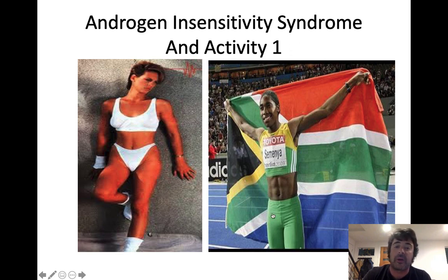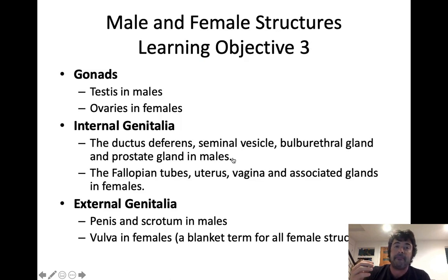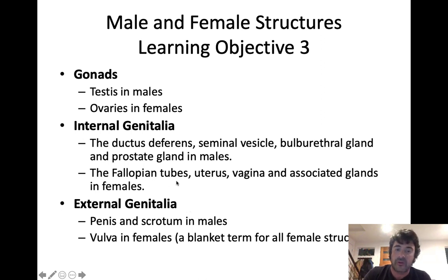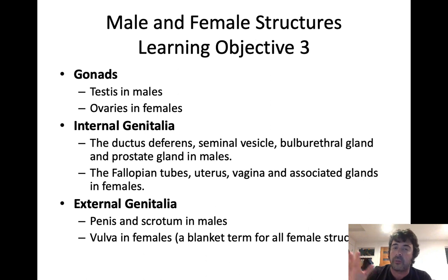So now we're going to go over male reproductive organs. The gonads in males are the testes, in females the ovaries. Internal genitalia of males: the epididymis, the vas deferens, the seminal vesicle, the bulbourethral gland, and the prostate gland. Females: the fallopian tube, uterus, vagina, and associated glands. External genitalia: penis and scrotum in males, and vulva is the blanket term for all of the external genitalia in females.